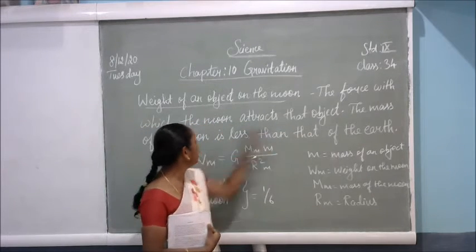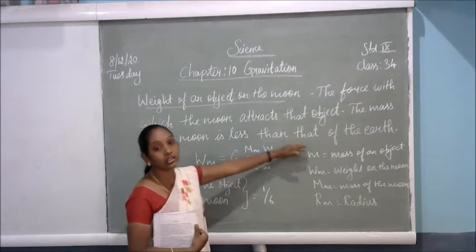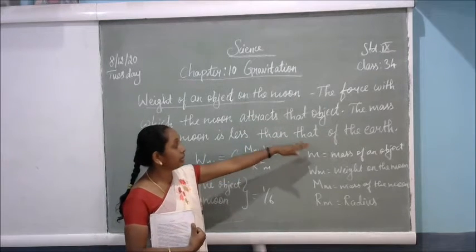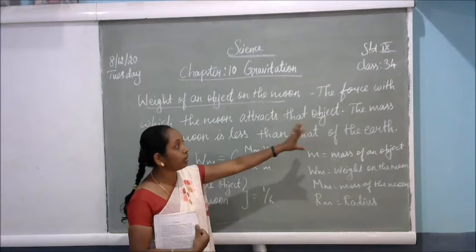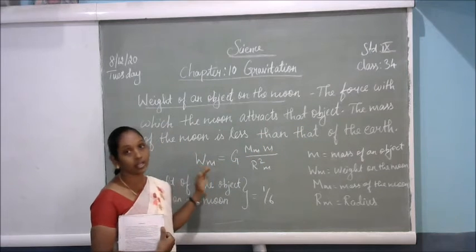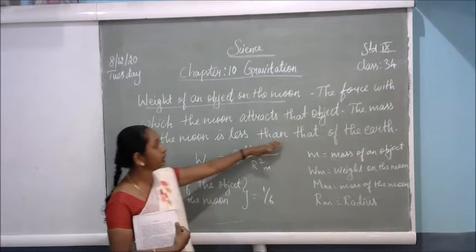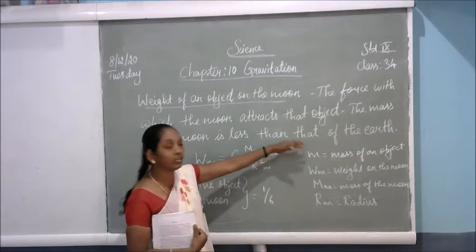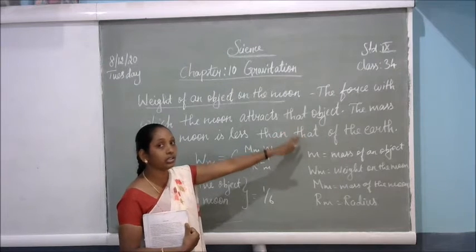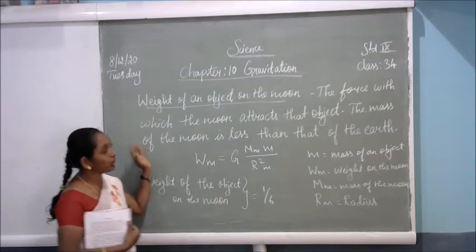The mass of the moon is less than that of the earth. Compared to the earth, the moon's mass will be lesser. Our earth's mass will be more compared to the moon. This is the weight on the moon.